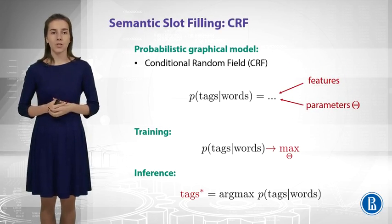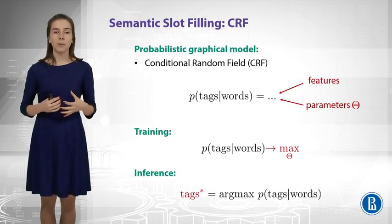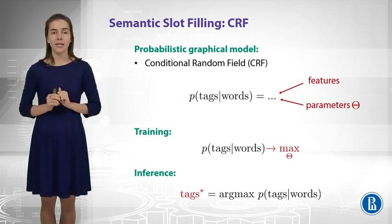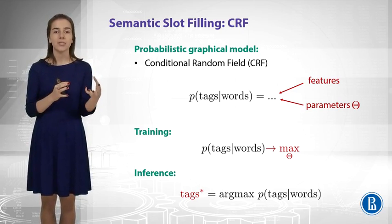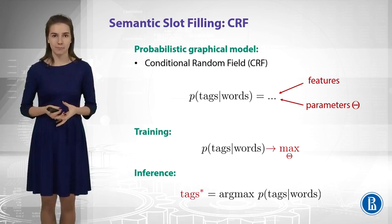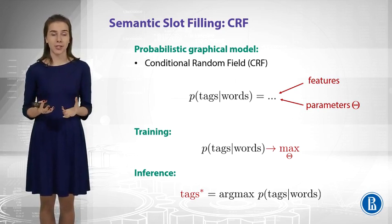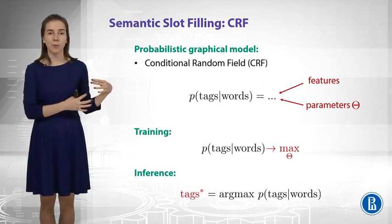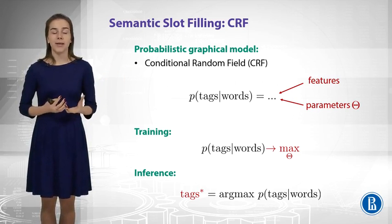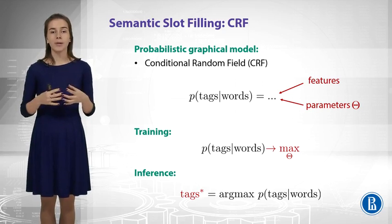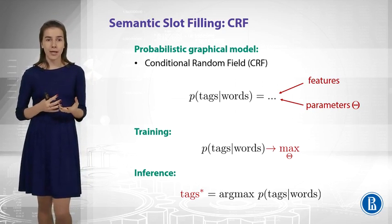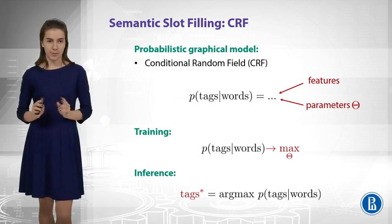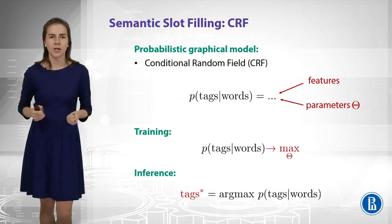Then you need to define your model. The probabilistic model would, for example, produce the probabilities of your tags given your words. This can be different kinds of models, and we will explore lots of them in this course. Generally, these models have some parameters, and they depend on the features you have generated. The parameters of the model should be trained — you take your training data and feed it to the model, maximizing the probability of what you see. This fixes the parameters, and you can then apply the model to test data. For inference, you find the most probable tags for your words with fixed parameters — this is called inference, or test, or deployment.